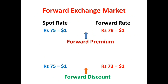On the other hand, if the spot rate is rupees 75 equals dollar one and the forward rate is only rupees 73 equals dollar one, then the foreign currency is sold at a forward discount. If the forward rate is less than the spot exchange rate, then the foreign currency is sold at a forward discount, indicating an expected depreciation of the foreign currency with respect to domestic currency.